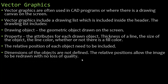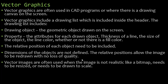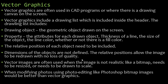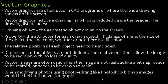Dimensions of the objects are not defined — the relative positions allow the image to be redrawn with no loss of quality. Vector images are often used when the image is not realistic like a bitmap, and needs to be resized or drawn to scale. When you're modifying photos using photo editing software like Photoshop, bitmap images would be better than editing vector graphics, because vector graphics don't really need to be edited — they can be resized and drawn to scale with no loss of quality through the drawing list, which contains the drawing object, the property, and the relative position of each object.